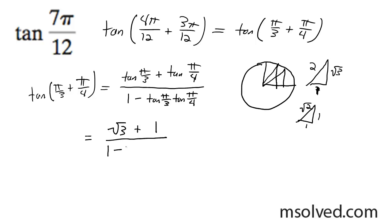And on the denominator, 1 - the tangent of π/3, just root 3 times 1. So you're going to get root 3 + 1 over 1 - root 3.